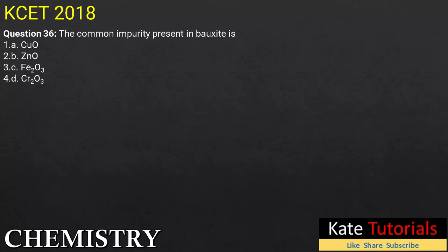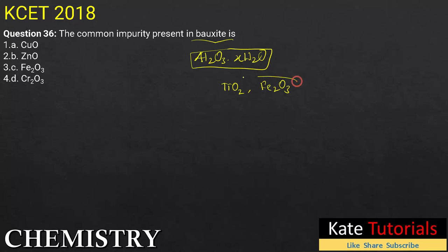Bauxite ore is nothing but aluminium oxide, Al₂O₃·xH₂O. Along with that, there will be little impurities like TiO₂ and Fe₂O₃ — these are the common impurities present with bauxite ore. The answer for this question is option 3, Fe₂O₃, which is also called hematite ore.